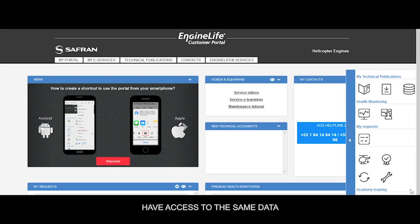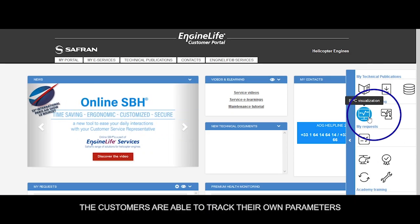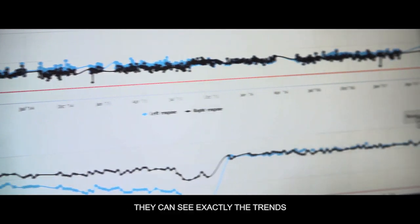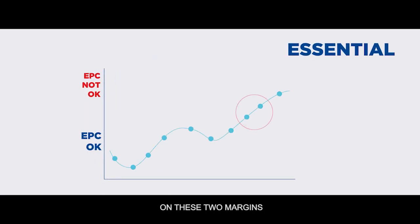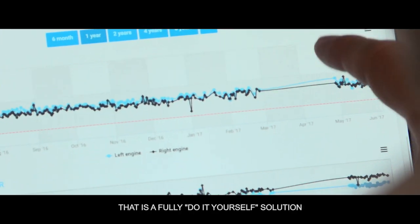All the people inside the company have access to the same data. The customer is able to track its own parameters, engine power check margins. He can see exactly the trends and if there are alerts on these margins. He also has the possibility to request expertise based on these power checks. That's a fully do-it-yourself solution.